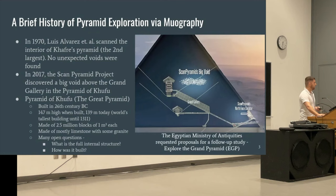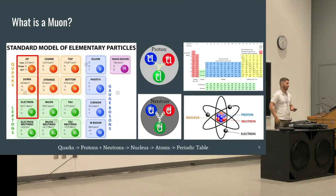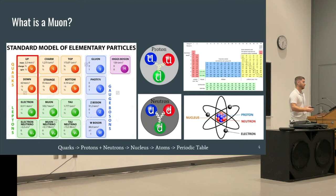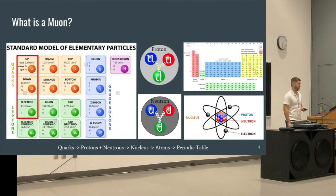We'll take a major step back for a general audience. First, I'll tell you what a muon is. We're pretty much all familiar with the periodic table, which has all the elements. An atom is basically a positively charged nucleus surrounded by electrons, and each nucleus is made up of protons and neutrons. This is the point at which chemistry stops and particle physics begins — protons and neutrons are made up of more fundamental particles called quarks.